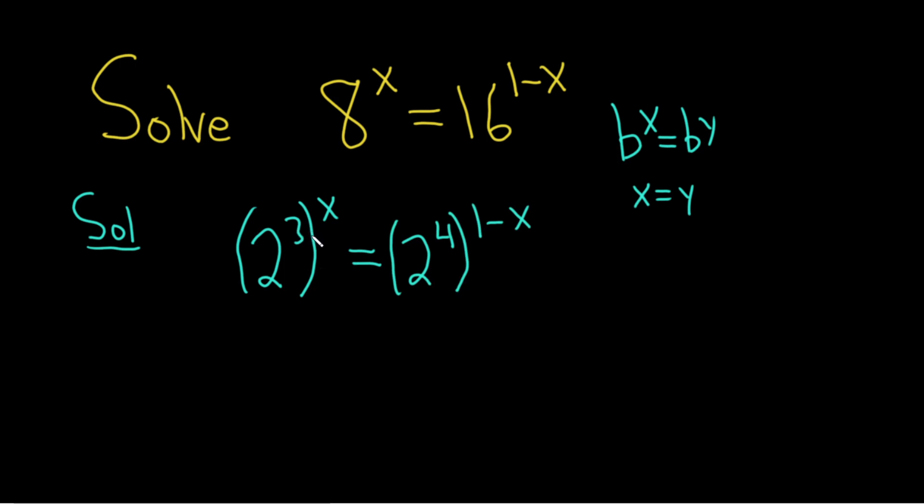So properties of exponents say that we multiply here. So this is 3 times x. So this is 2 to the 3x and then this is equal to, and then here you can multiply through by the 4.